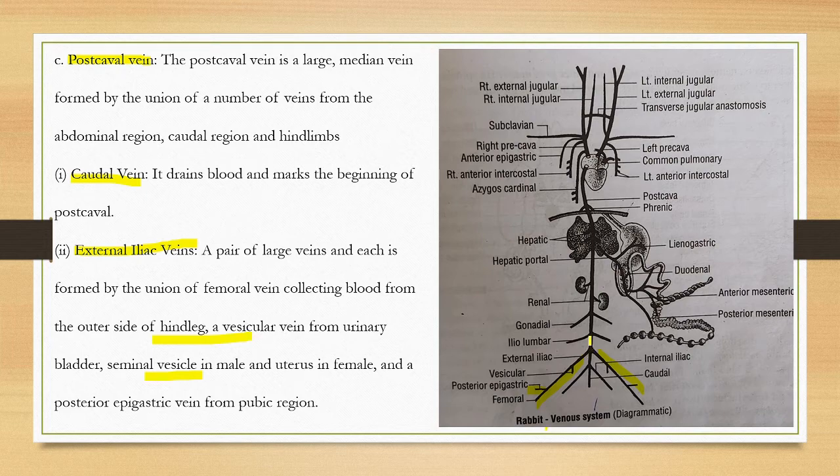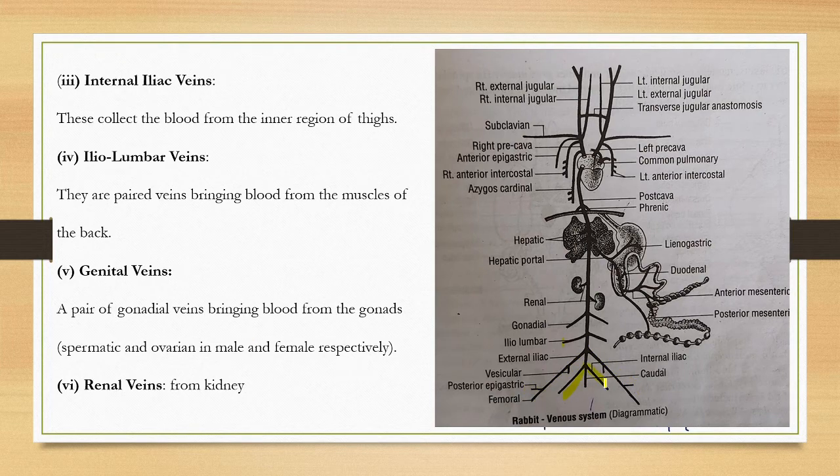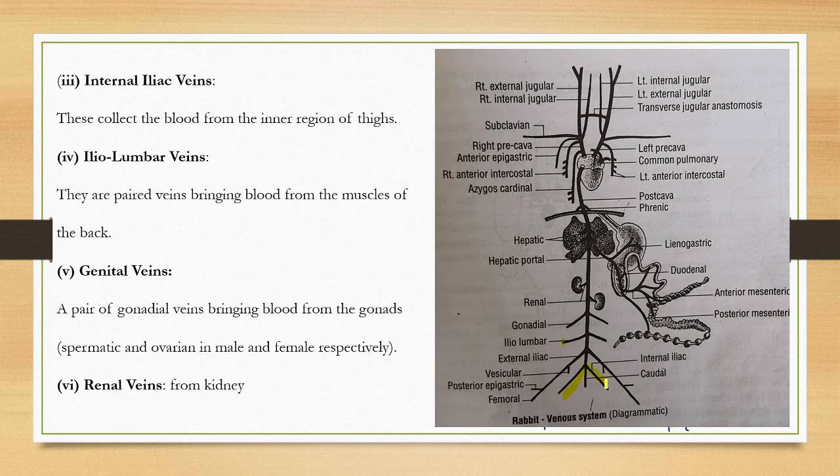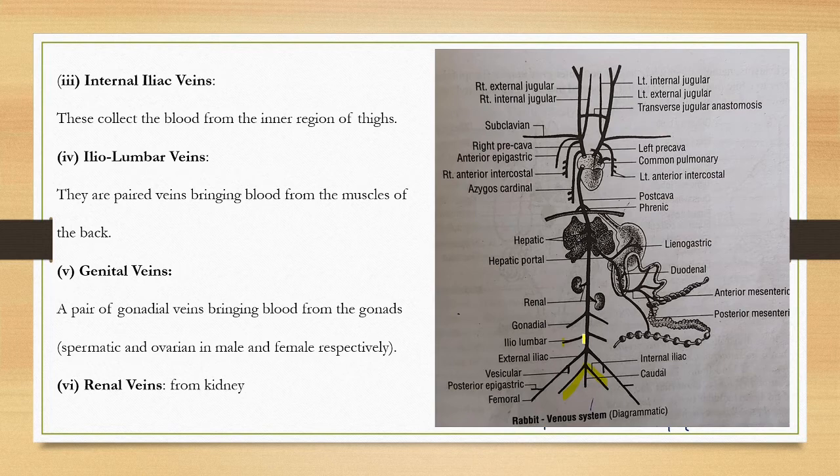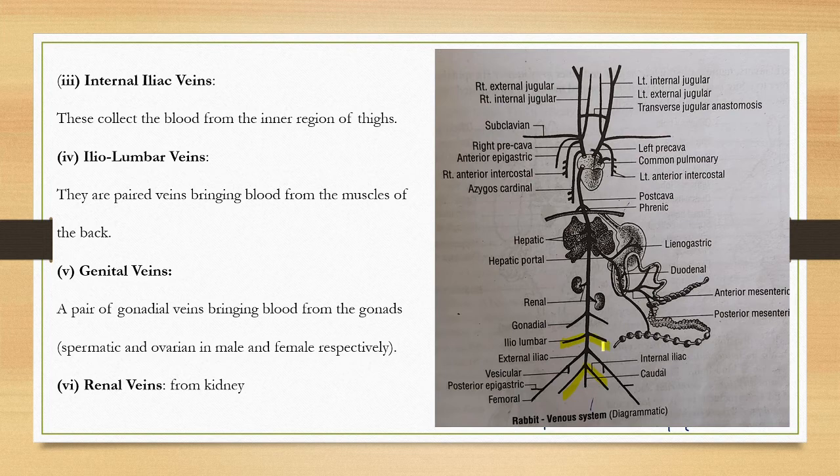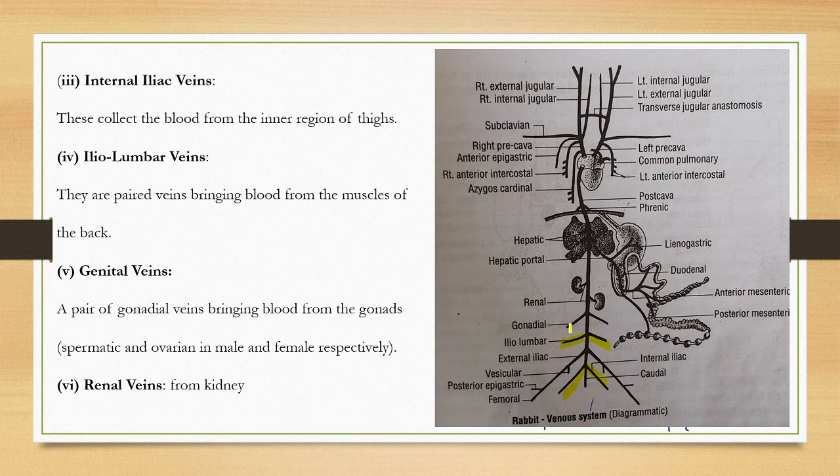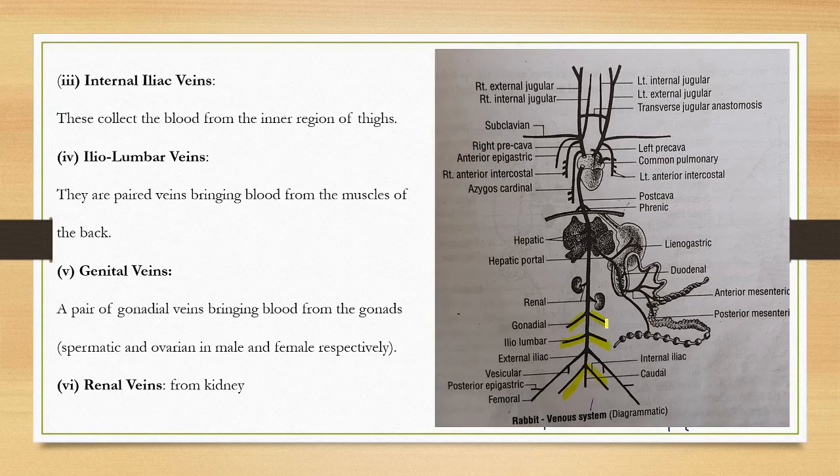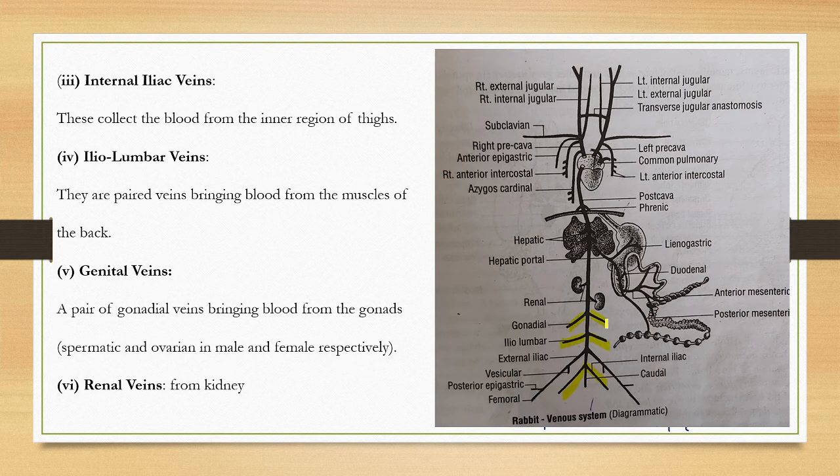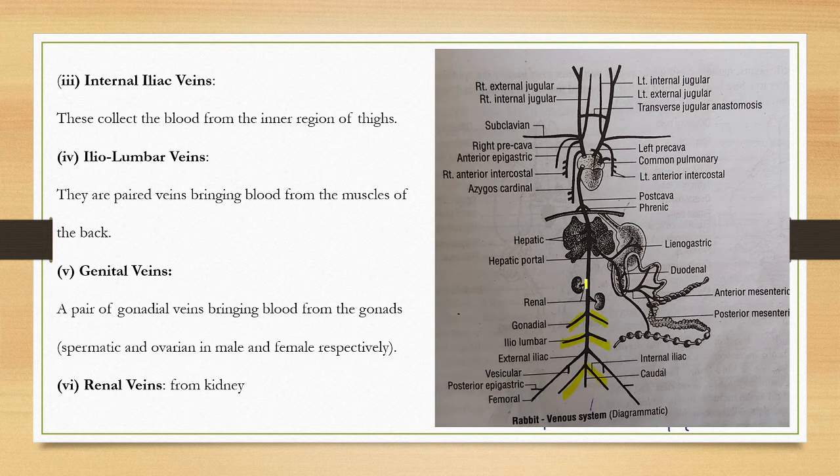At the junction, another vein called the internal iliac vein collects blood from the inner region of the thigh. The iliolumbar veins are paired veins bringing blood from muscles of the back. Then gonadal veins, which bring blood from the respective gonads: spermatic vein in male and ovarian vein in female. There is also the renal vein.